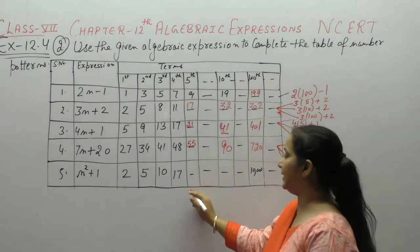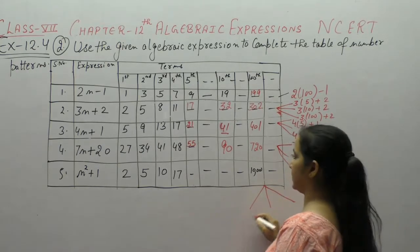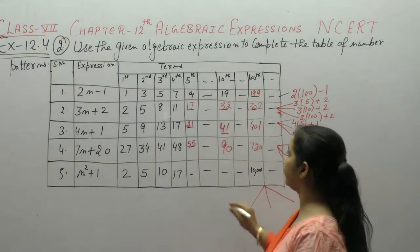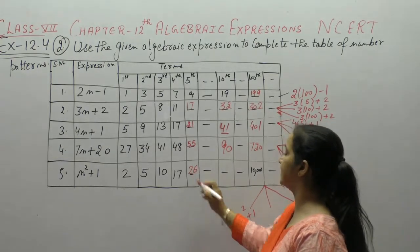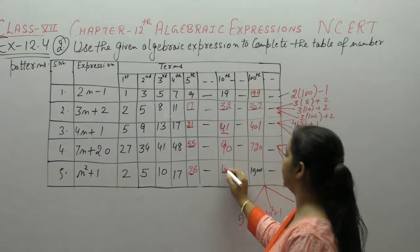Now, here, n की value 5. 5 square plus 1, 25 plus 1, 26. n की value 10, 10 square plus 1, 101.